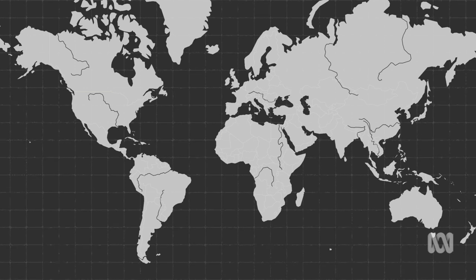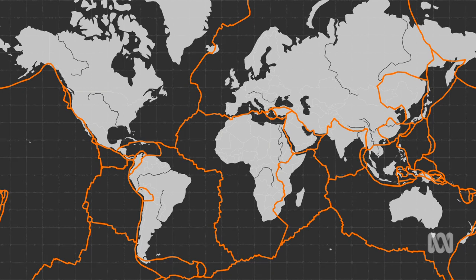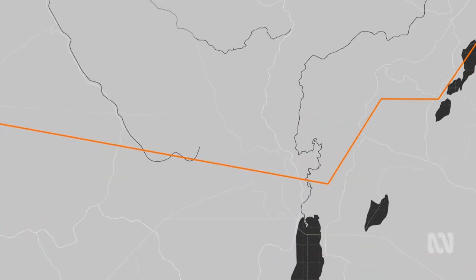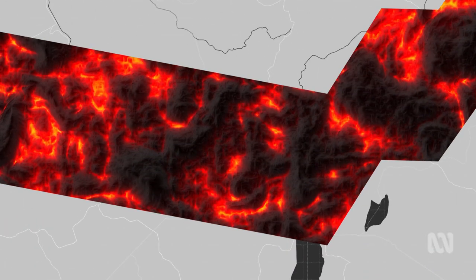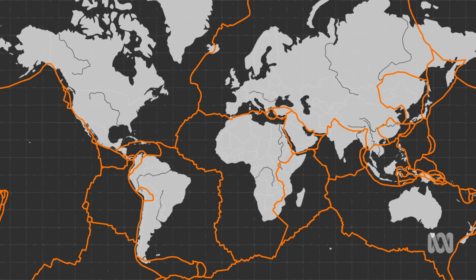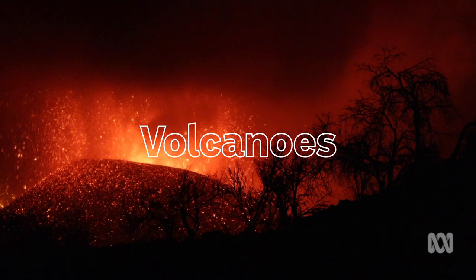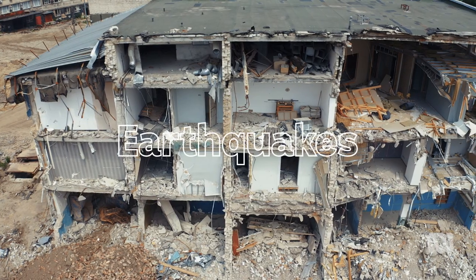This is a map of the Earth. I'm almost certain you already knew that, but what I want to show you is this — these are tectonic plates. They're a bit like jigsaw pieces that make up the Earth's crust, and they're essentially floating on molten rock below them. That means they're constantly moving, and it's this movement that creates mountains, volcanoes, and earthquakes.